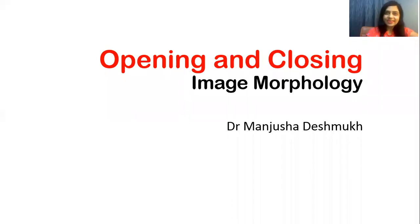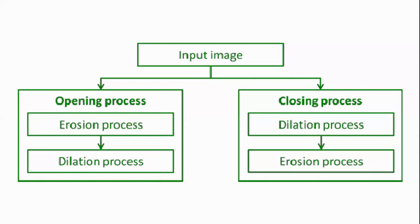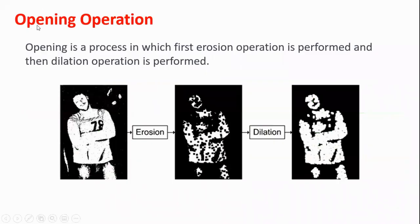Hello everyone. In this video I am going to explain opening and closing operations, which is a topic from image processing. If we have an input image and want to perform opening operation, first we have to go for erosion and then dilation. For closing operation, first we do dilation and then erosion. So opening operation is a process in which first erosion is performed and then dilation.